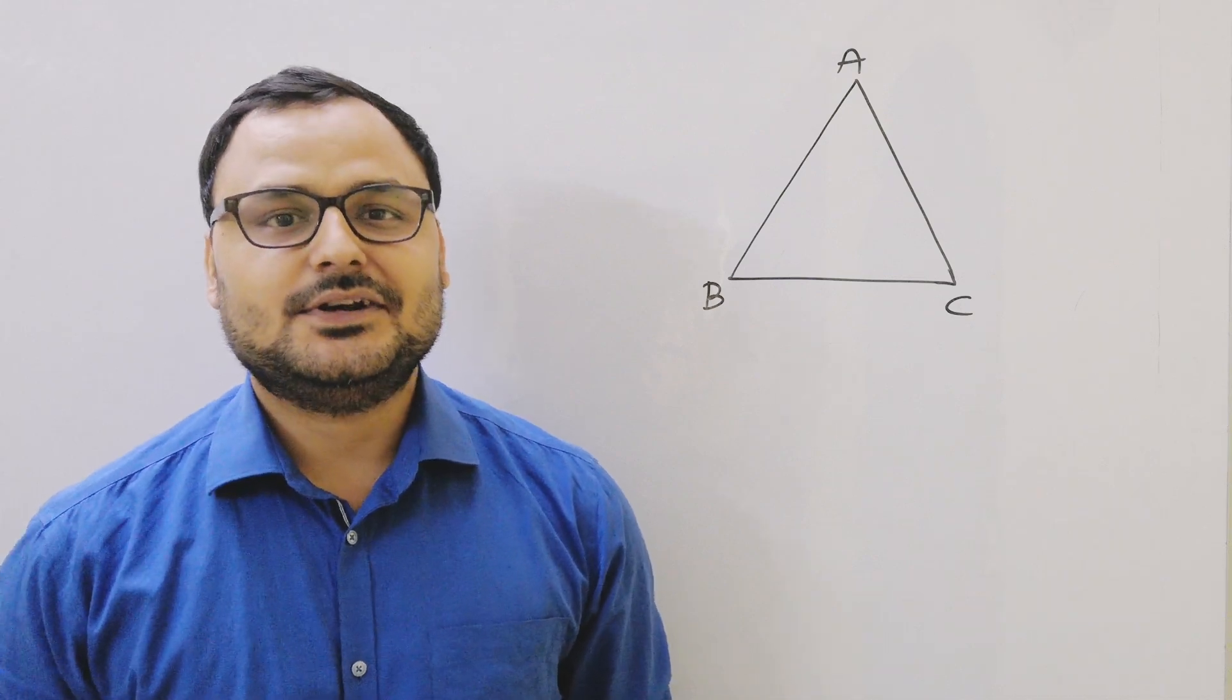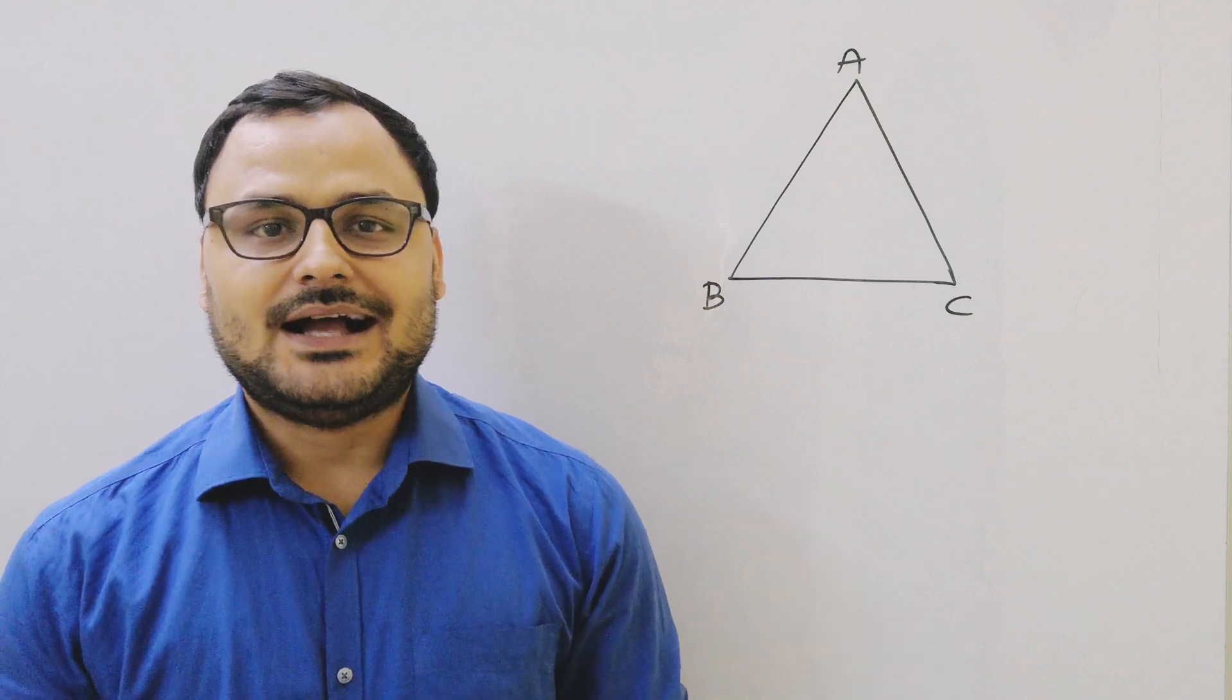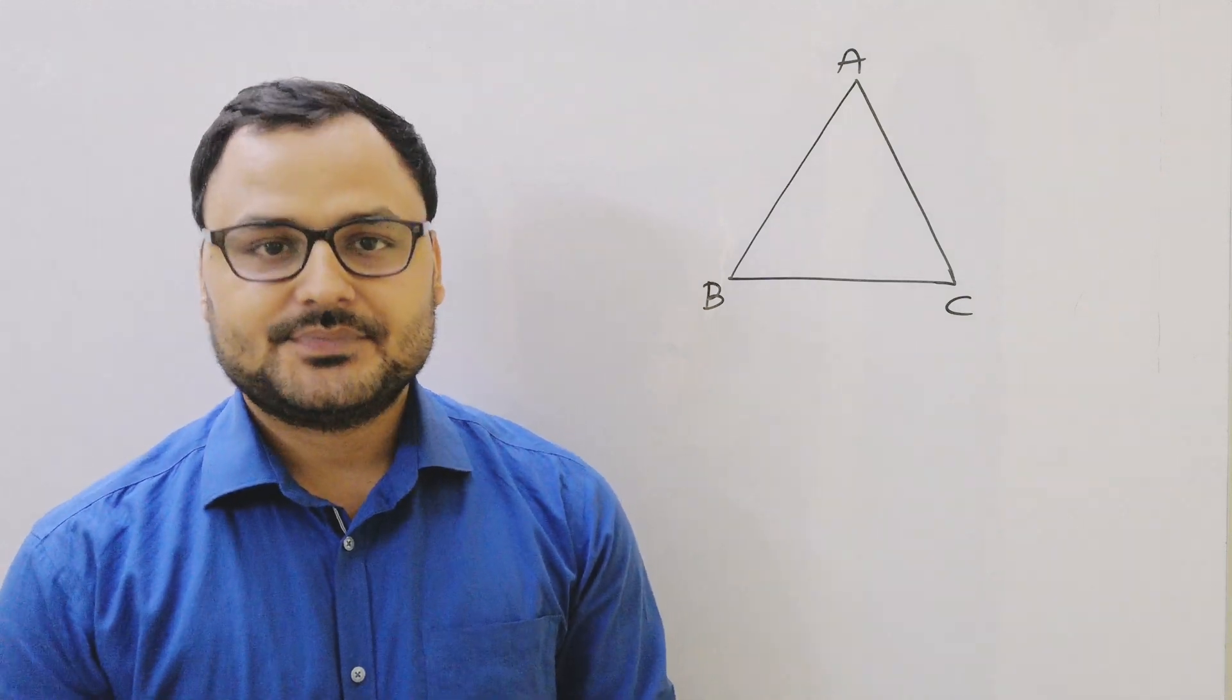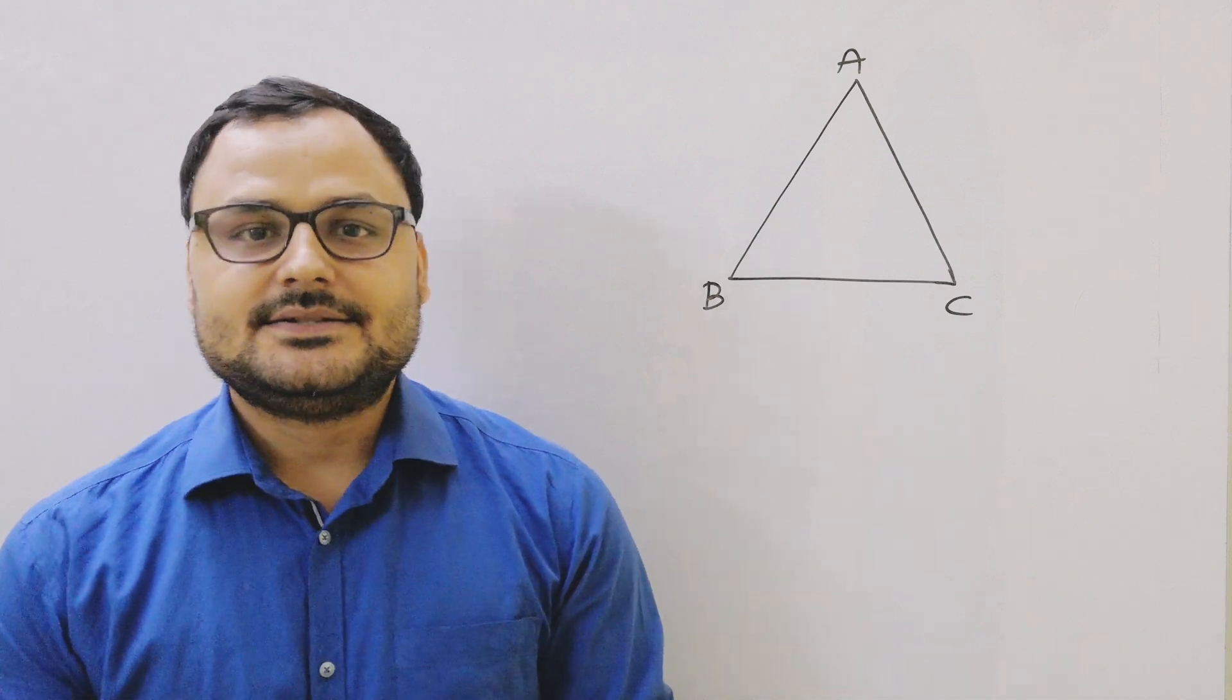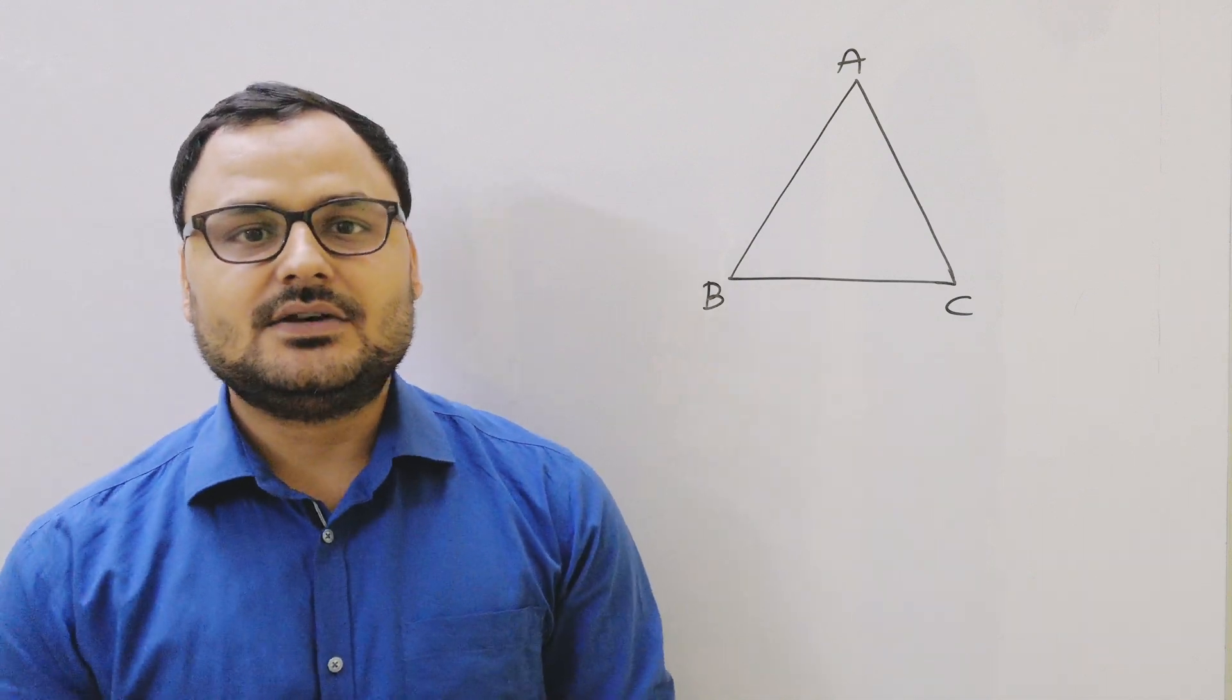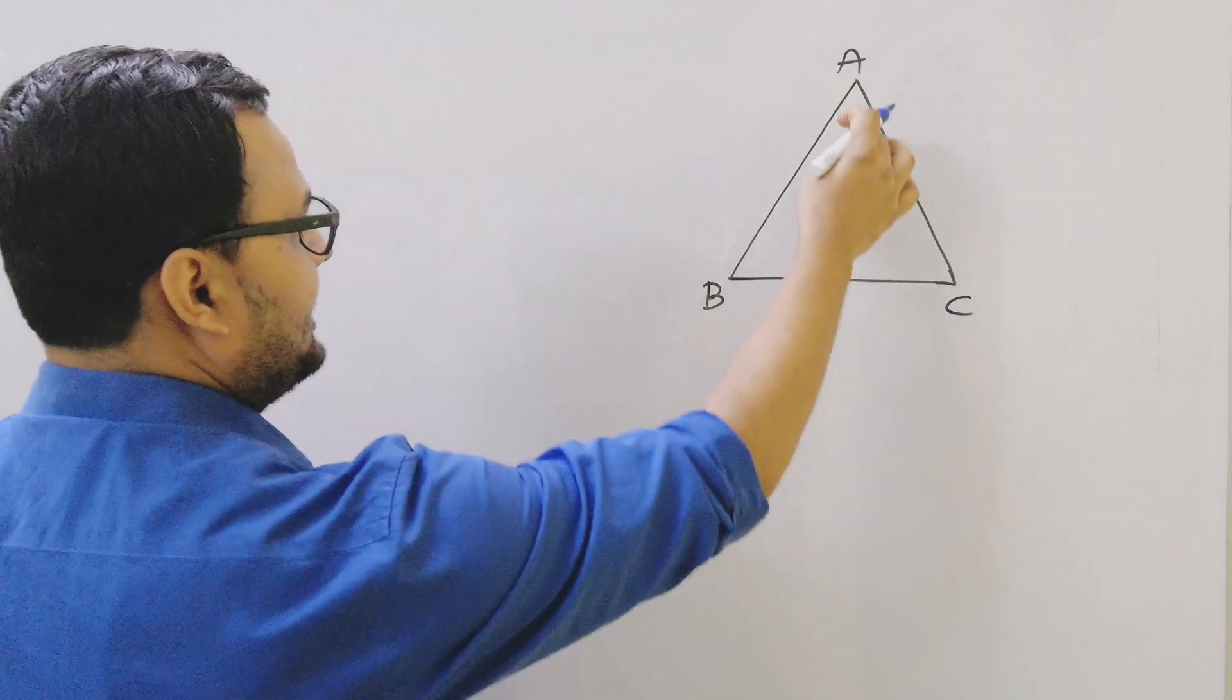Welcome to Prakash Academy. Today we are going to do angle sum property. We have to prove that in a triangle, the sum of all three angles equals 180 degrees. Now this is a triangle ABC.